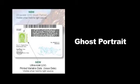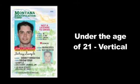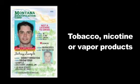The card also has a ghost portrait. If the ID is horizontal, it was issued when the holder was 21 years of age or older. If they were under the age of 21 when the ID was issued, it will be vertical and will expire on their 21st birthday. A vertical ID is not valid identification to purchase or consume alcohol, as well as tobacco, nicotine, or vapor products.